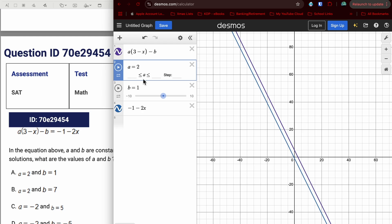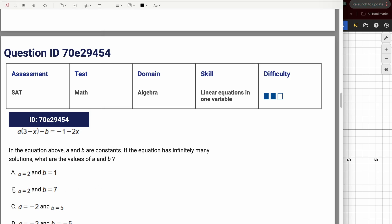Try B, says A is 2, and then it says B is 7. So I do that. And then now there's the same line. So if I erase the one, there's the purple line, there's the blue line, purple line, blue line. So they are clearly the same line here. I have infinitely many solutions. So B is the correct answer.